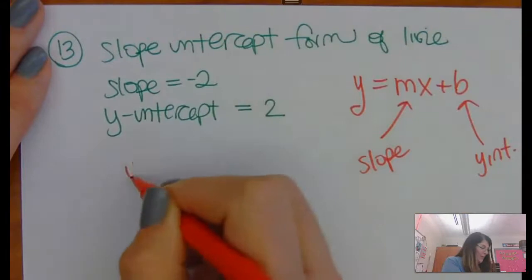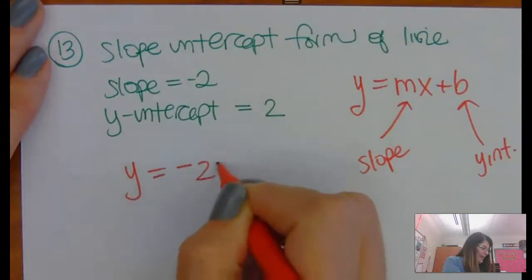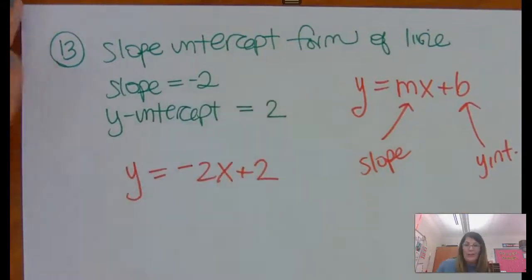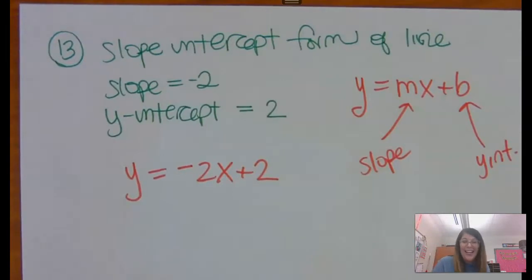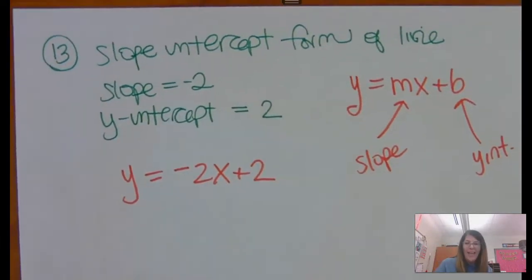So all you're doing is y equals negative 2x plus 2, and that's it. Plug it in — it's really that simple. Slope-intercept form: if you have a slope and a y-intercept, that is as straightforward as it comes.